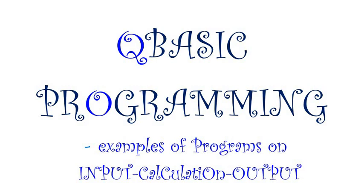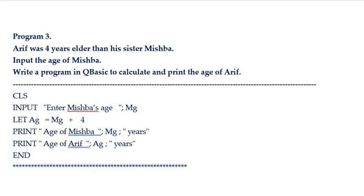A few more that were in the line. Now you can see a simple example coming up. Just look at the program — what does it say? Arif was 4 years elder than his sister Mishba. Input the age of Mishba, then calculate and print the age of Arif using a QBasic program.